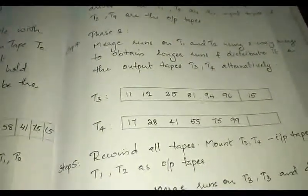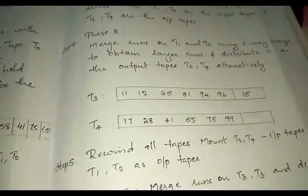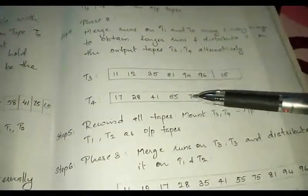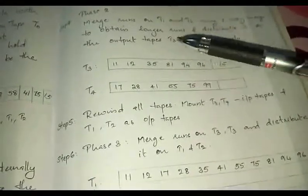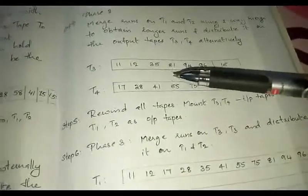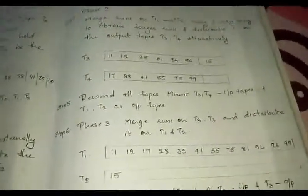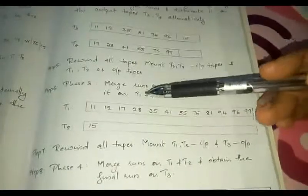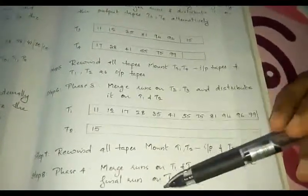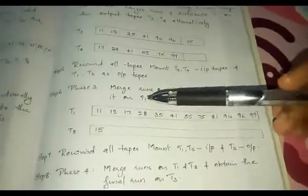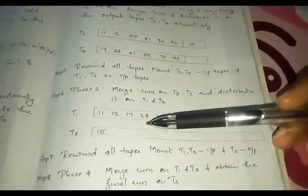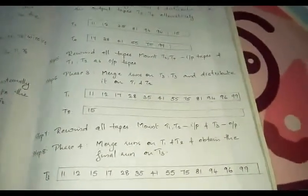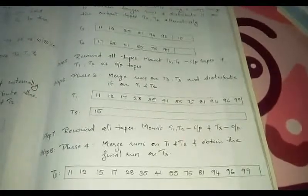After phase two, T3 and T4 hold the merged runs. Rewind all tapes — now T3 and T4 act as input tapes and T1 and T2 as output tapes. Merge the runs on T3 and T4 and write alternately to T1 and T2. After another rewind, T1 and T2 act as input and T3 as the single output tape, since only one run each remains. After final merging, we get a single run with all records in sorted order. This is how k-way merge or balanced merge sort is performed.